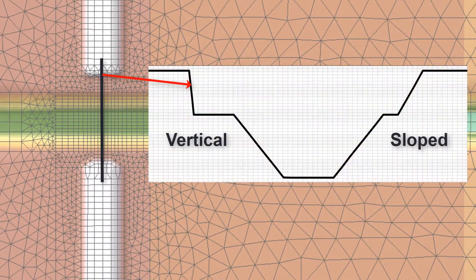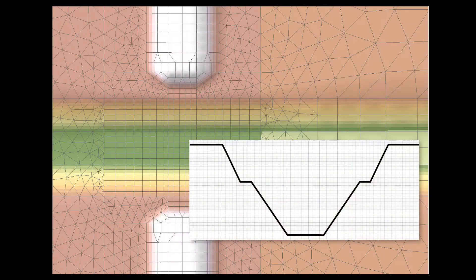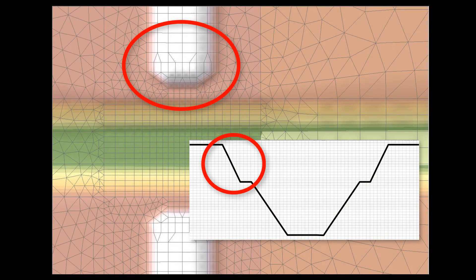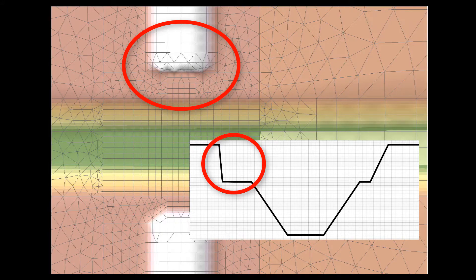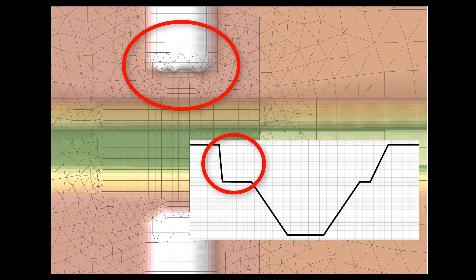Abutments are typically sloped or vertical, both of which can be represented by the mesh. Sloped abutments can be represented like other terrain features. Vertical abutments can be represented by creating a hole in the mesh which acts like a vertical wall, or by creating steep elements that approximate a vertical wall.